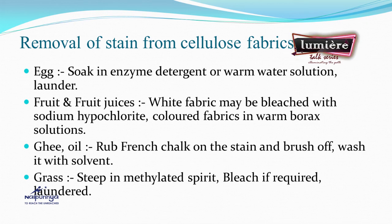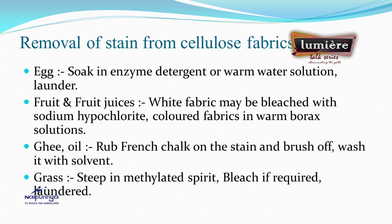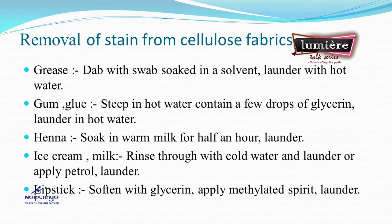For fruit and fruit juices: white fabric may be bleached with sodium hypochlorite, or colored fabric treated in a warm borax solution. For ghee or oil stains: wrap French chalk on the stain, brush off, then wash with a solvent. For grass stains: steep in methylated spirit and bleach if required, then launder. For grease stains: dab with soap in solvent, then launder with hot water.